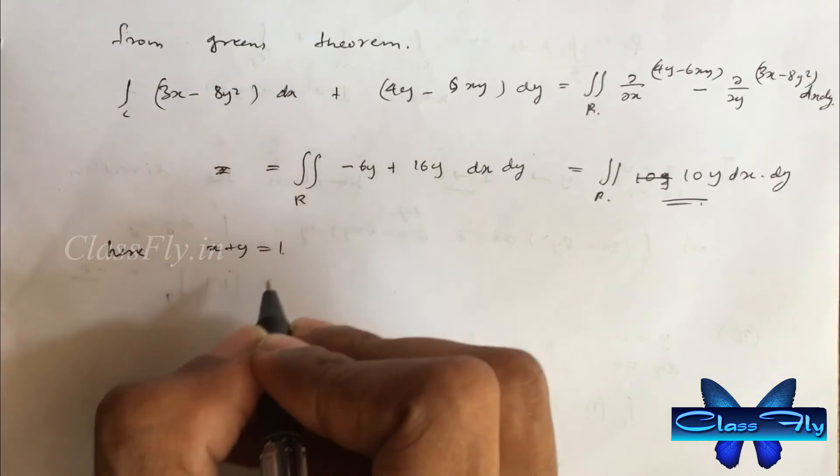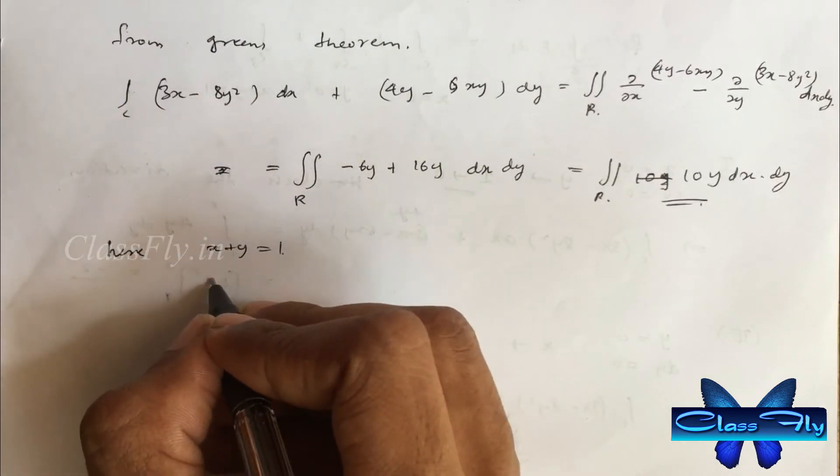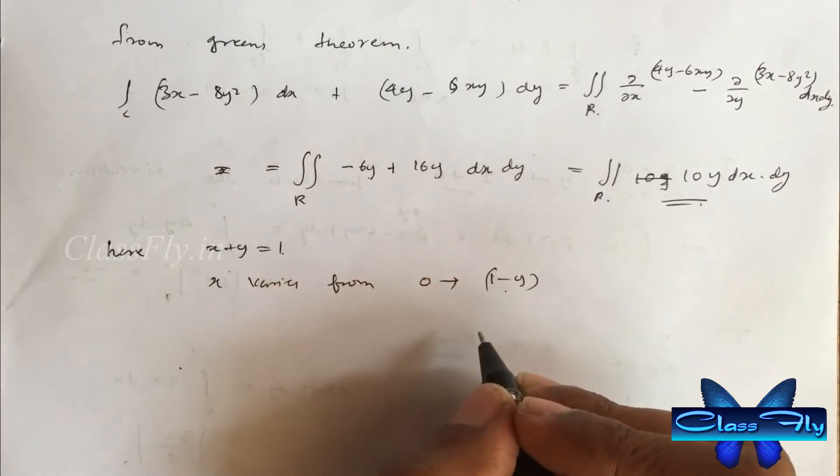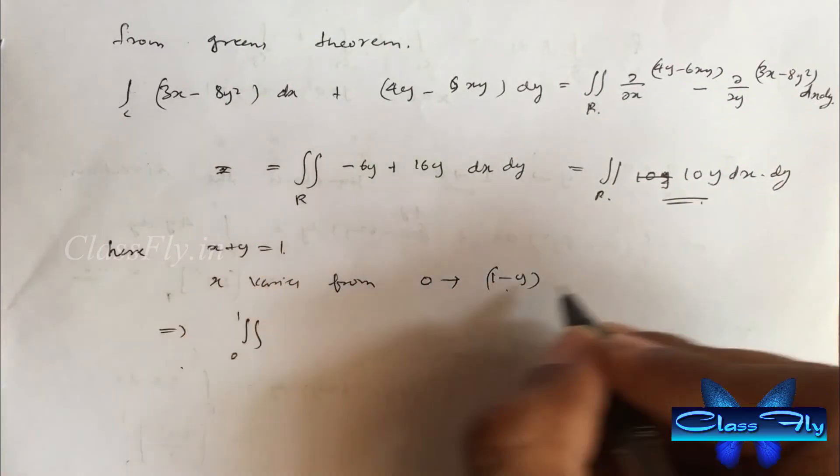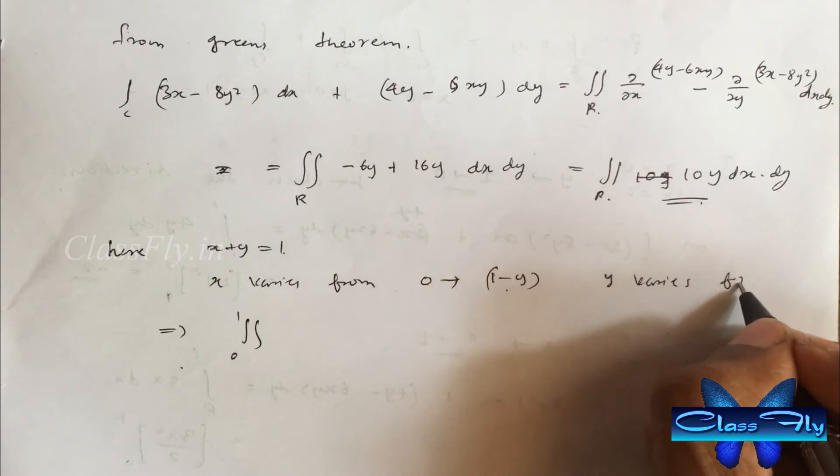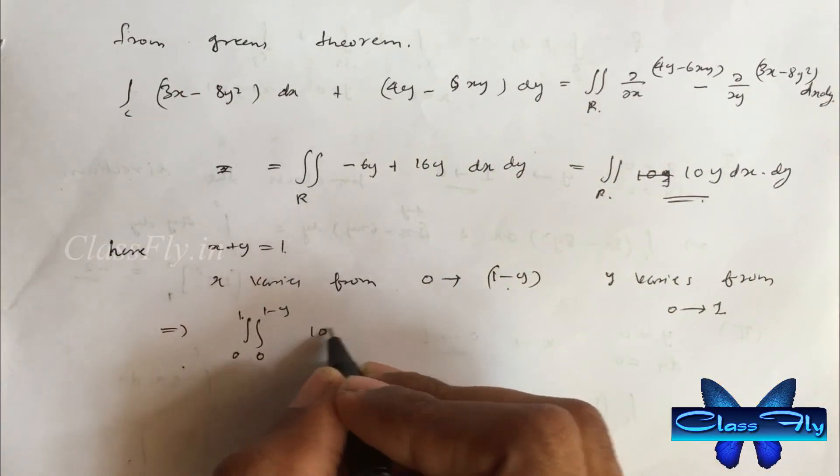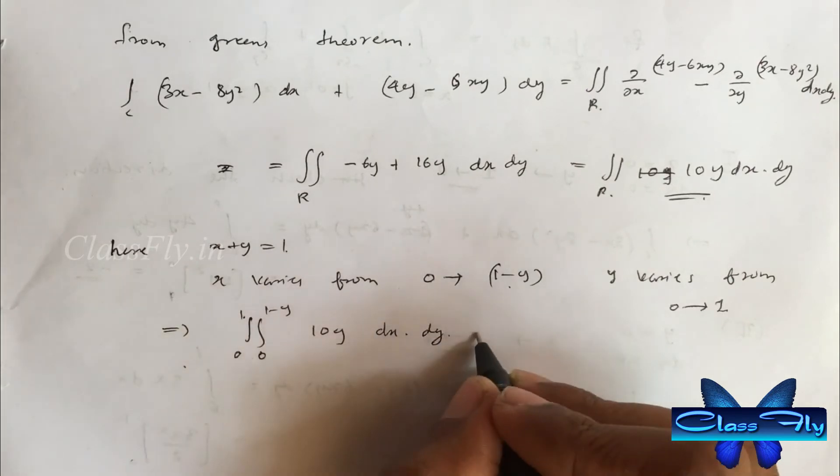Here we have x plus y equal to 1. So x varies from 0 to 1 minus y. We can choose the range of x in terms of y since there is only y and therefore x varies from 0 to 1 minus y. y varies from 0 to 1.